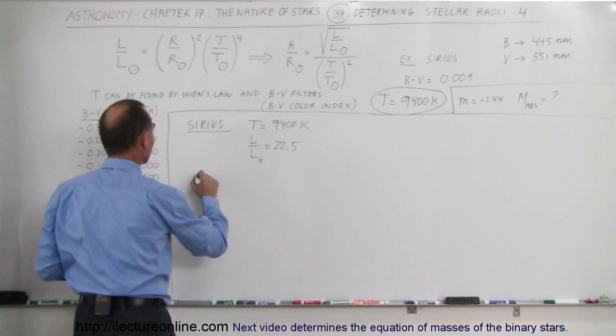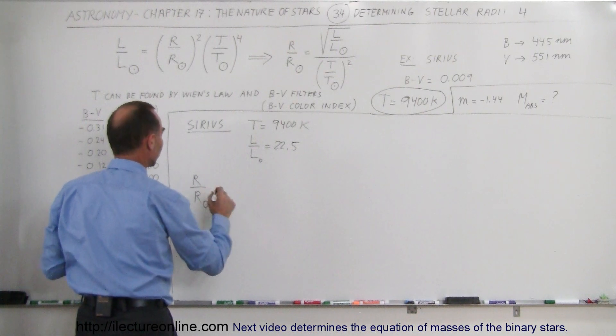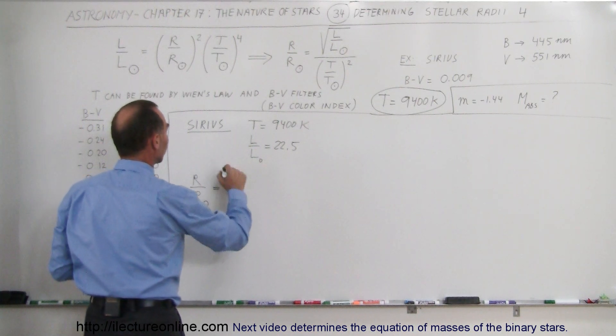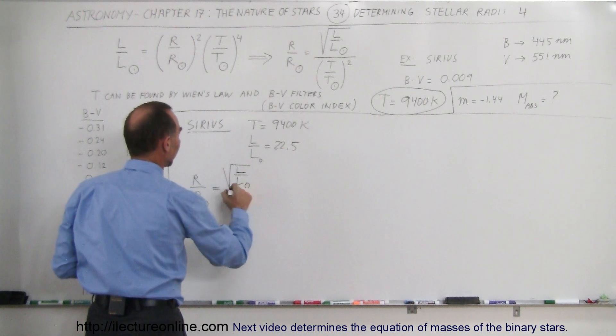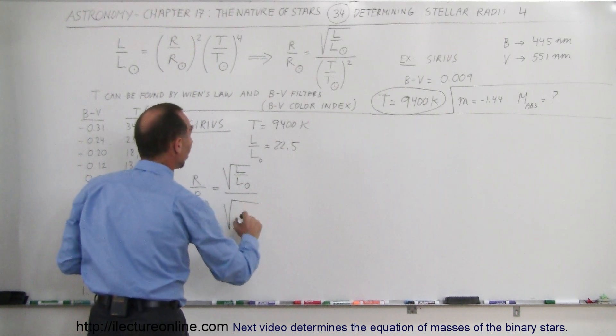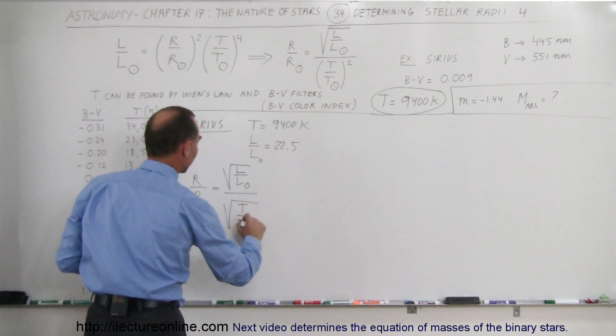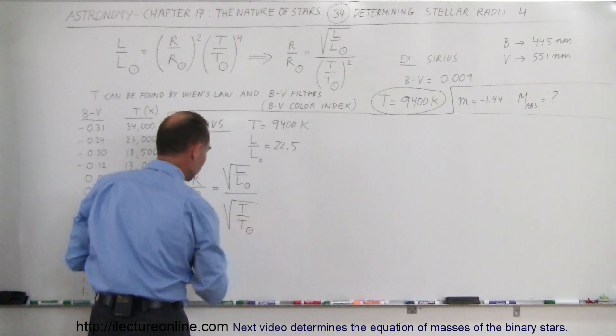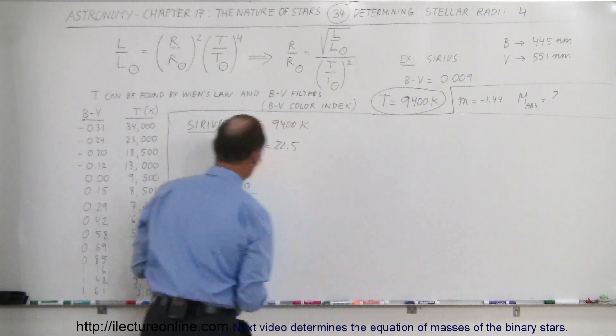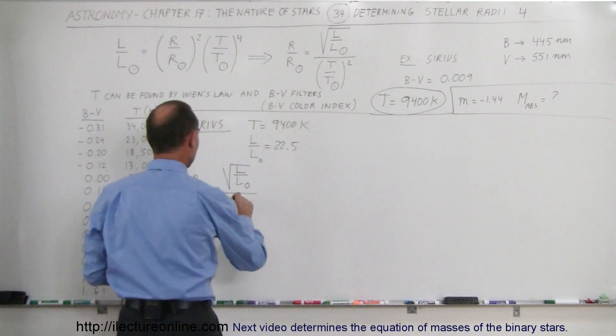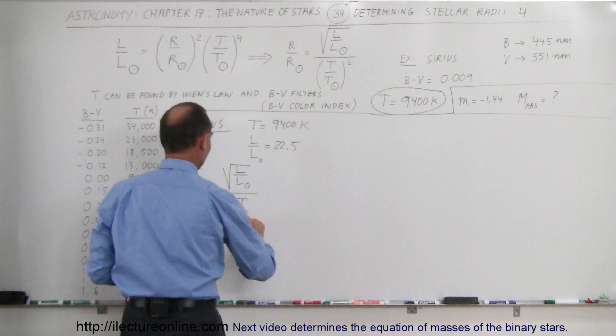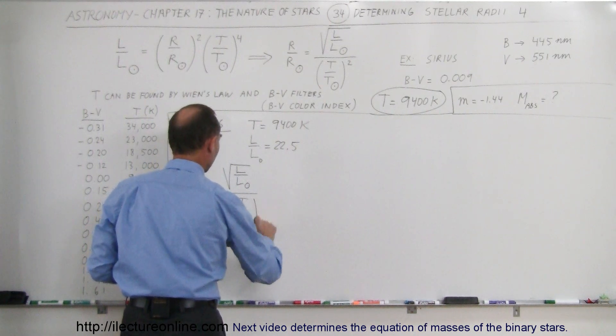So we can say that the radius of Sirius divided by the radius of the Sun is equal to the square root of the luminosity of Sirius divided by the luminosity of Sun, divided by the square root of the temperature of Sirius divided by the temperature of the Sun. Not the square root, it's the number squared, the other direction. So we take the quantity temperature of Sirius divided by temperature of the Sun, quantity squared.